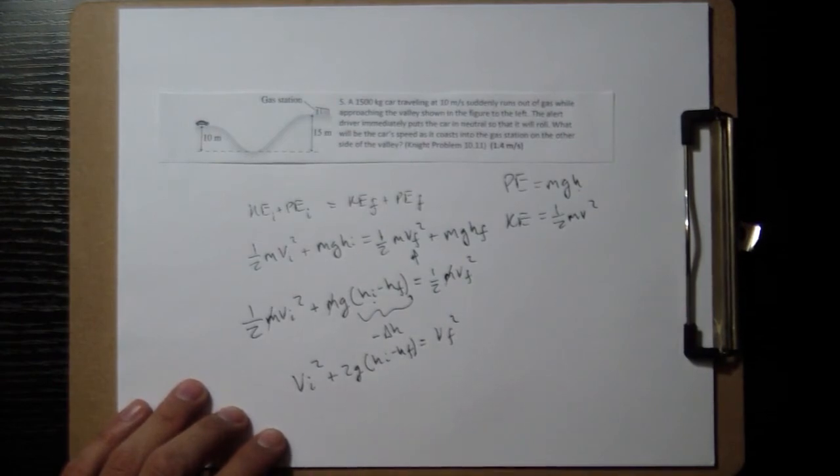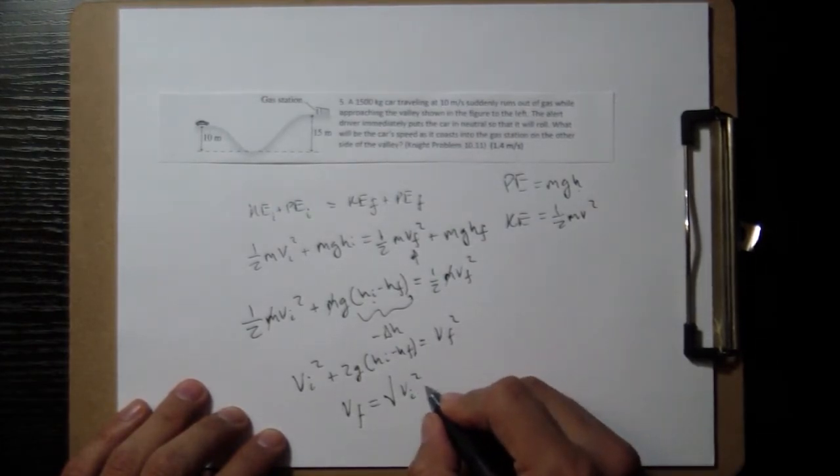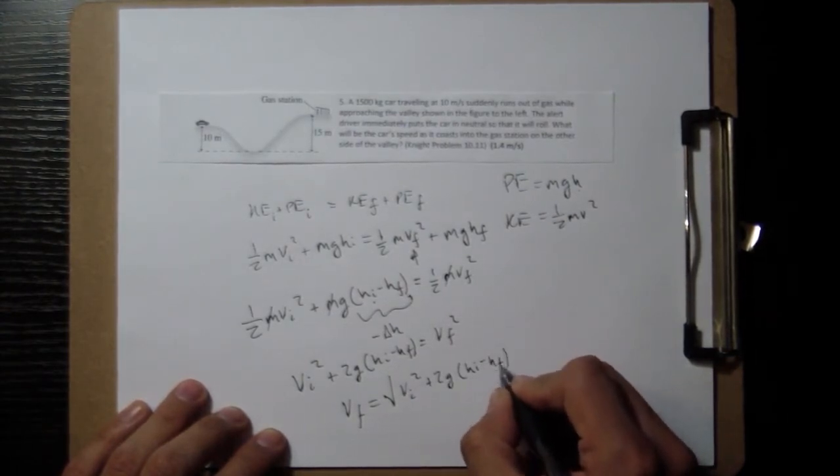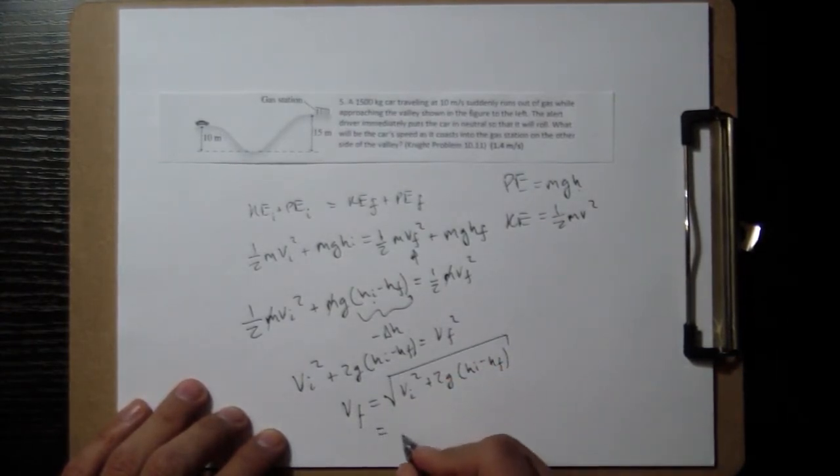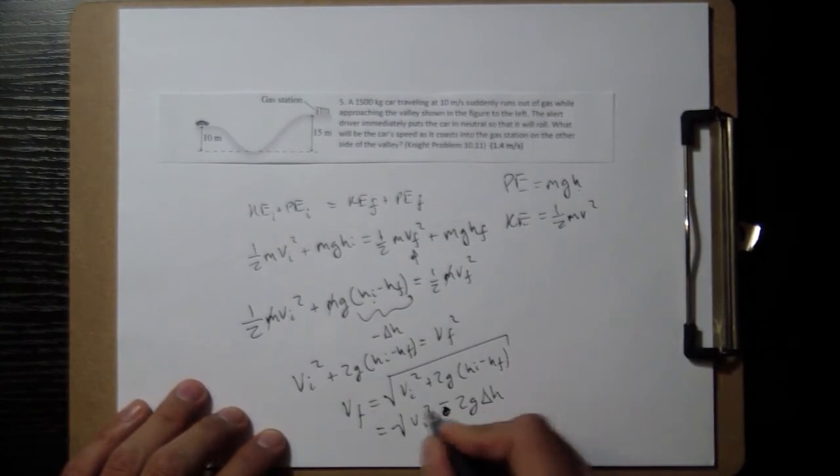And we just take a square root of the entire thing. So the final velocity is equal to the square root of the initial velocity squared and plus 2 g h i minus h f, which you can rewrite as a minus sign here: 2 g change in height.